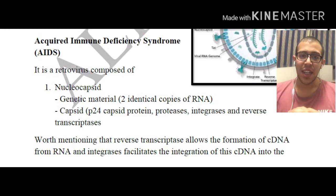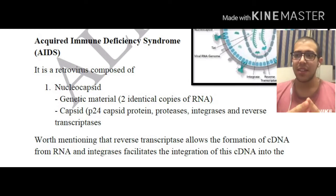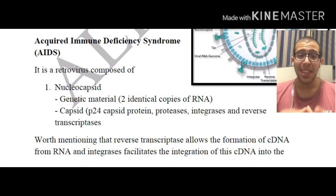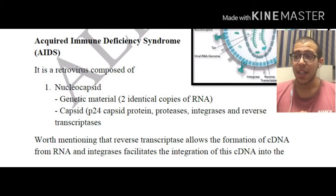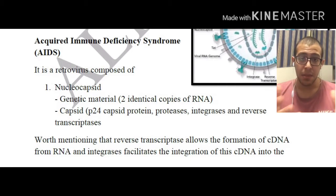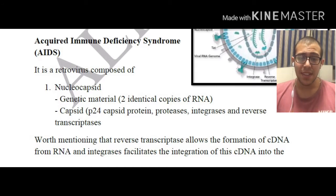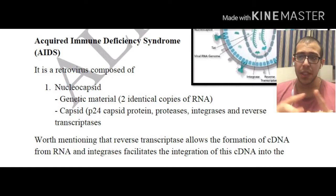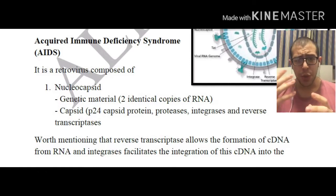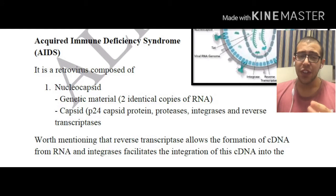AIDS stands for Acquired Immune Deficiency Syndrome. It is a retrovirus composed of two major components: the nucleocapsid and the envelope. The nucleocapsid contains the genetic material — two identical copies of RNA — and a capsid composed of the p24 capsid protein, proteases to degrade proteins, integrases to integrate the cDNA into the host genome, and reverse transcriptase.